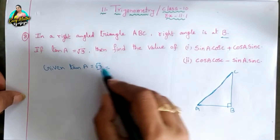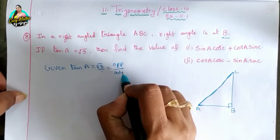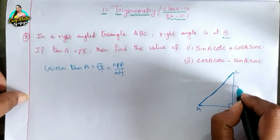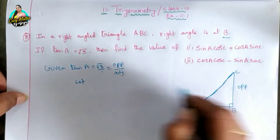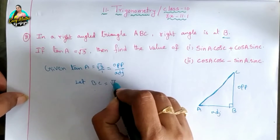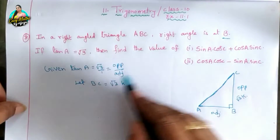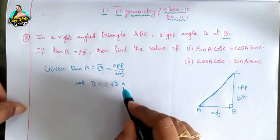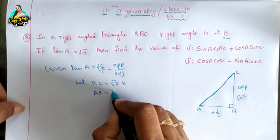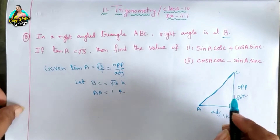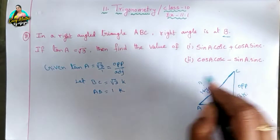The ratio of tan A is opposite side by adjacent side. For angle A, the opposite side is BC, which is equal to root 3·K, where K is a constant. The adjacent side is AB, which is equal to 1·K, where K is a constant.